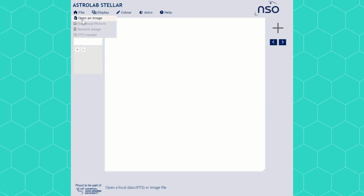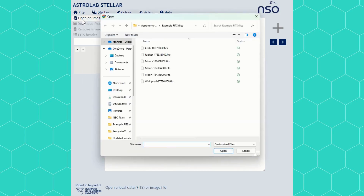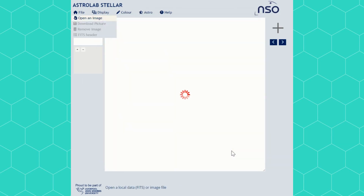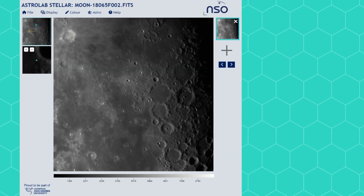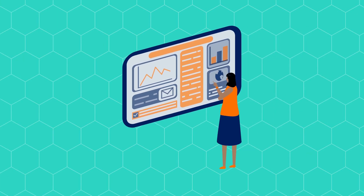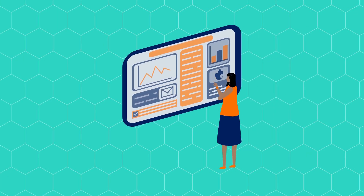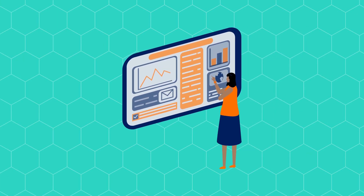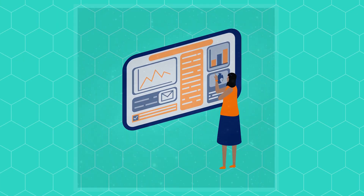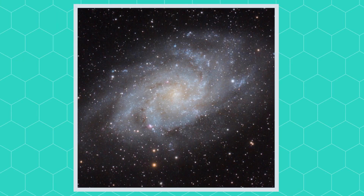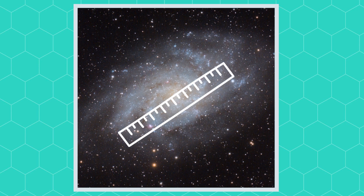Astrolab can do much more than just open images. The files from the telescope help us to do real science and Astrolab guides us through this. One thing you can measure is how big something is in space.